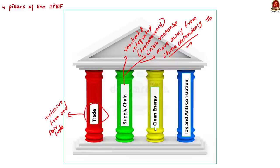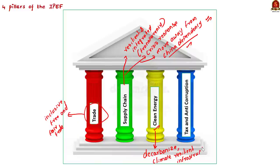The third is the clean energy, decarbonization, and infrastructure pillar. Through this, the IPEF plans to decarbonize economies and build climate-resilient infrastructure. If we build better infrastructure, we can adapt to environmental impacts like cloudburst. By decarbonizing the economy, climate change can be addressed and countries can adhere to the Paris climate commitment.